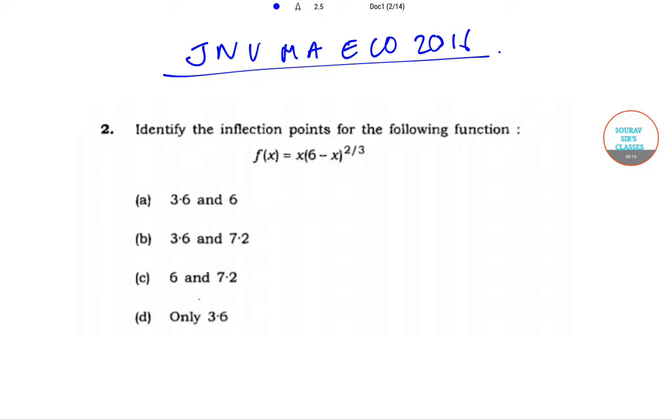We will be starting with question number 2, so let's begin. In question number 2, we need to identify the inflection point for the following function: f(x) = x(6-x)^(2/3).